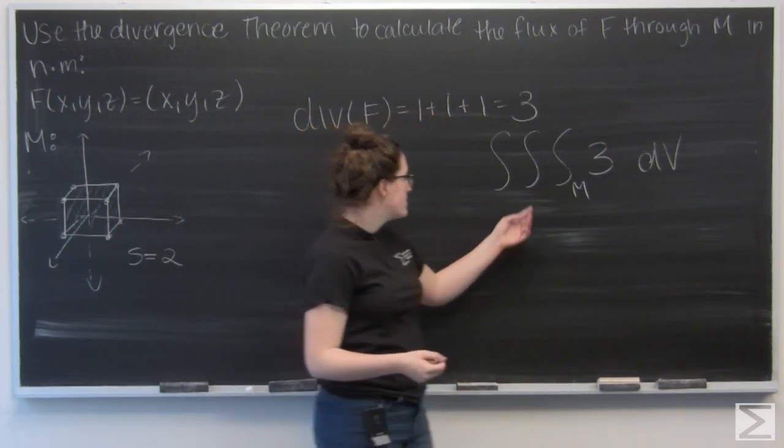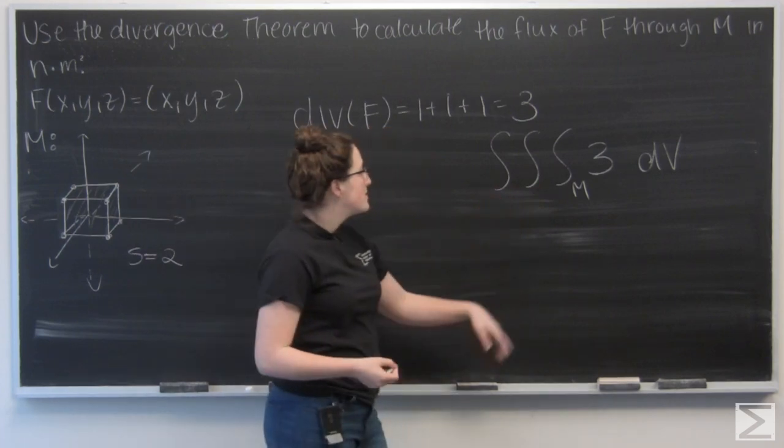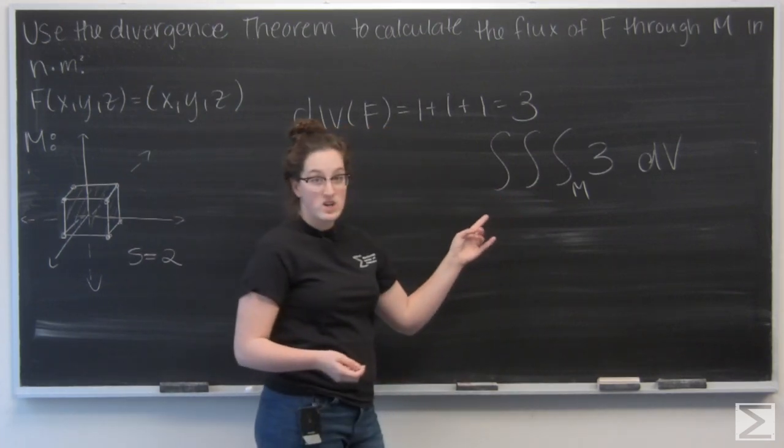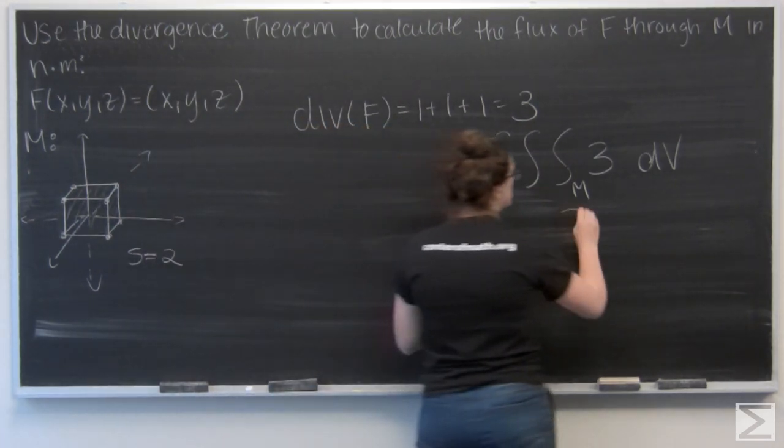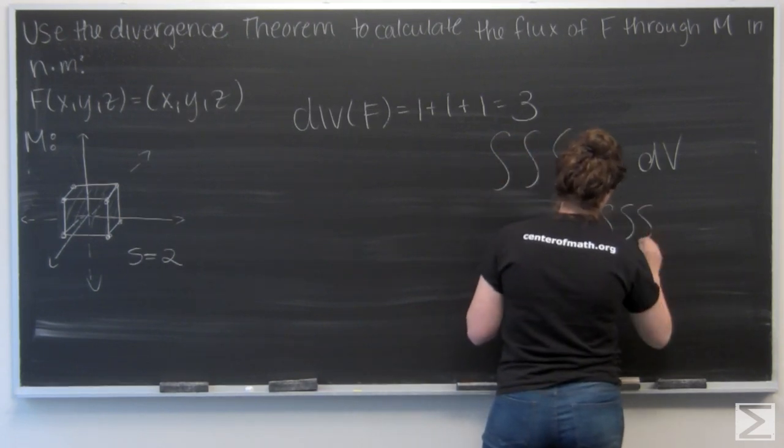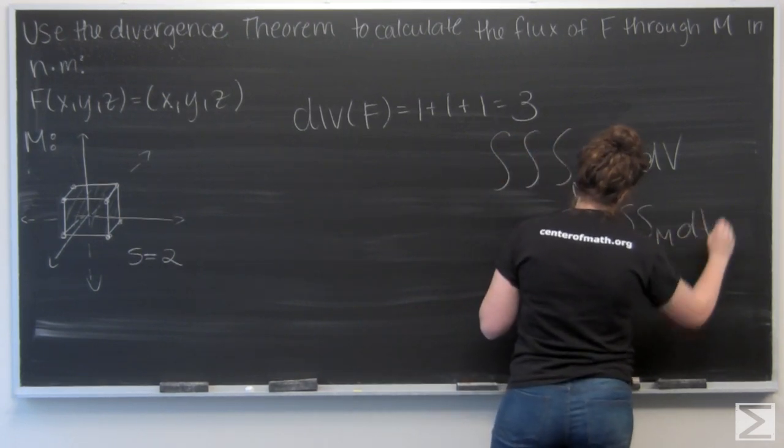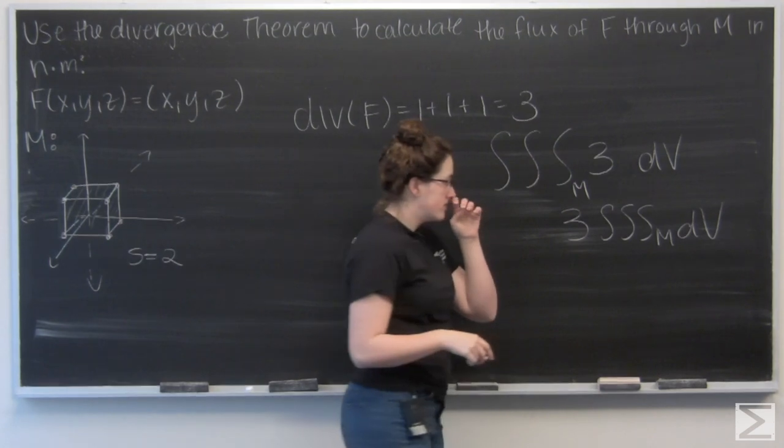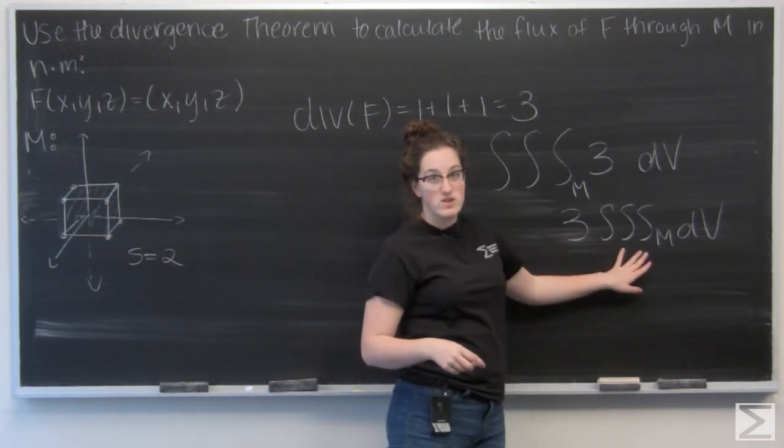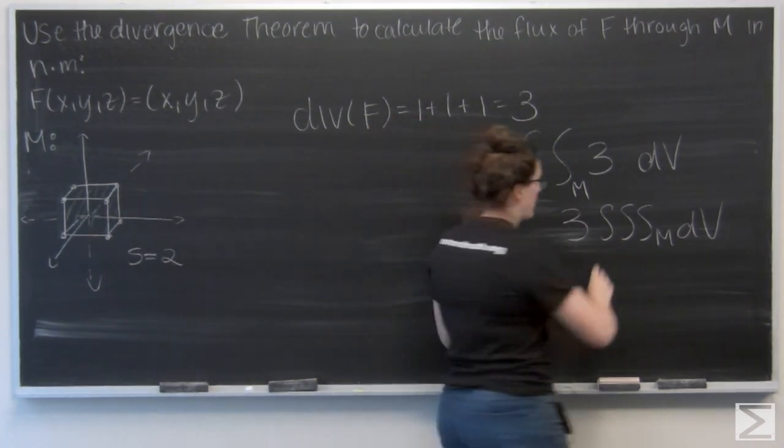So I can integrate over x, y, and z. But since the divergence is just constant, I can pull that 3 out. And I'm integrating with respect to volume, so this component is just going to be the volume of M.